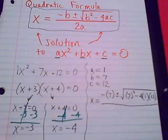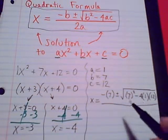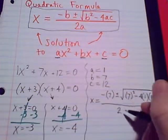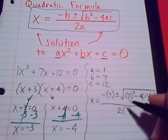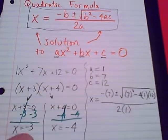12, all over. So that entire expression so far is all in the numerator. Our denominator is 2 times a. So we have 2 times 1.